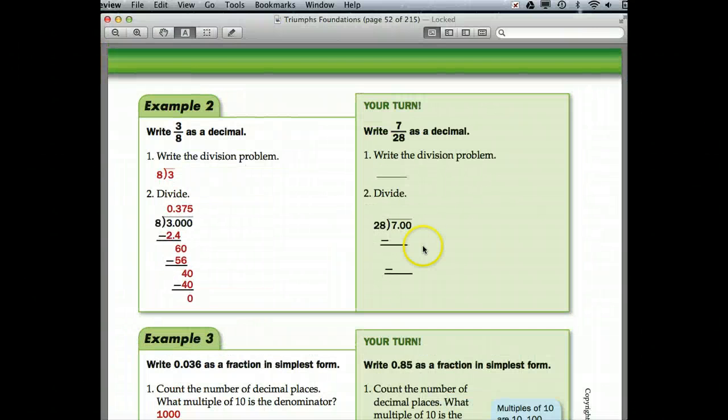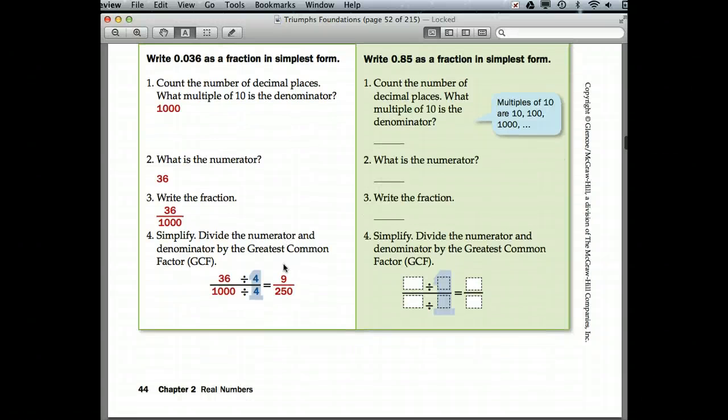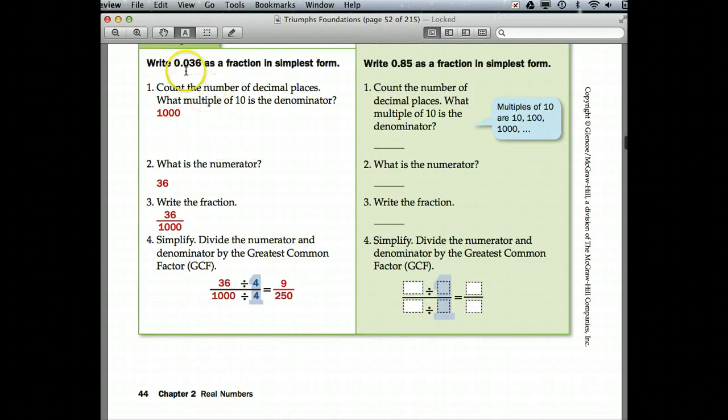Let's move on to example three. We're going to kick it up a notch. We are to write 36 thousandths as a fraction in simplest form. So we counted the number of decimal places. Whenever I'm doing it, I start counting from the decimal: tenths, hundredths, thousandths. Because there's three decimal places, you know you're going to have three zeros behind. Your multiple of ten is going to have the same number of zeros as you have decimal places.